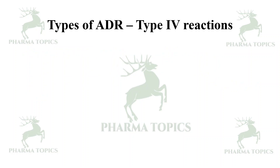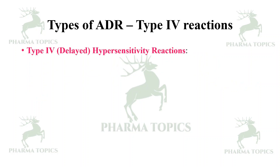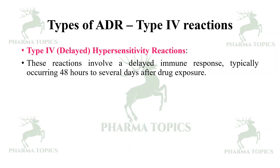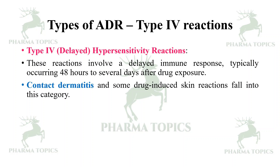Type 4 reactions are delayed hypersensitivity reactions. These involve a delayed immune response, typically occurring 48 hours to several days after drug exposure, though they may delay up to several months. Examples include contact dermatitis and drug-induced skin reactions — for example, sulfa drug-induced skin reactions fall into this category.